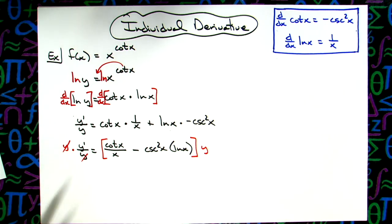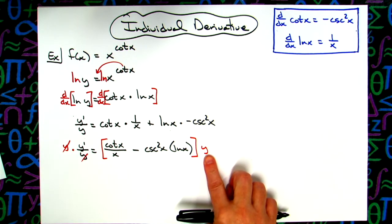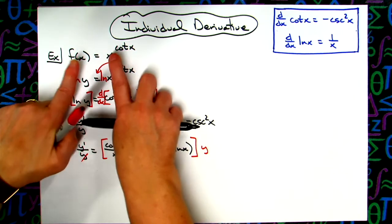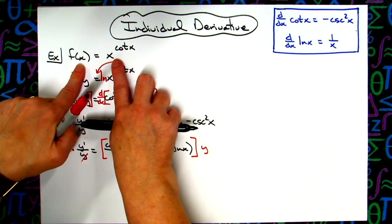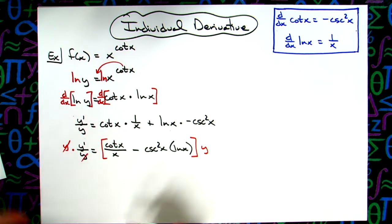Last step is going to be to replace this y with what it originally equaled. When I replaced f(x) with y, that meant y = x^(cot x).